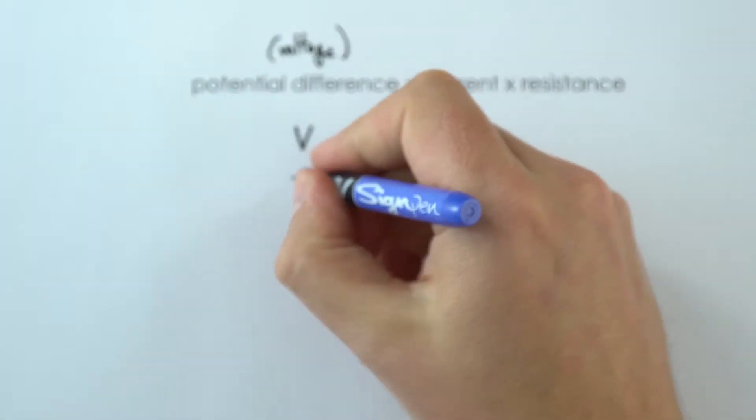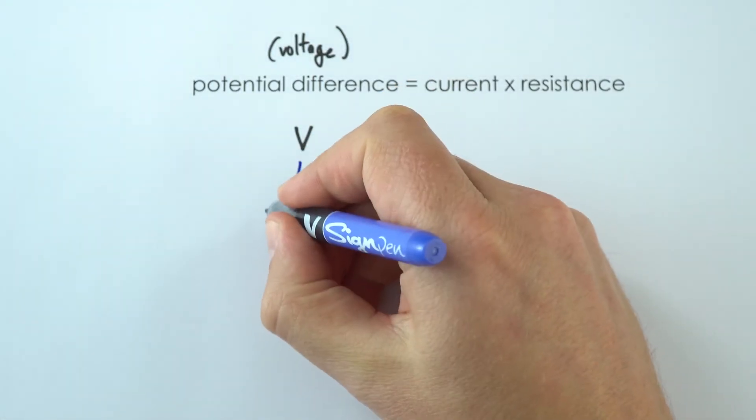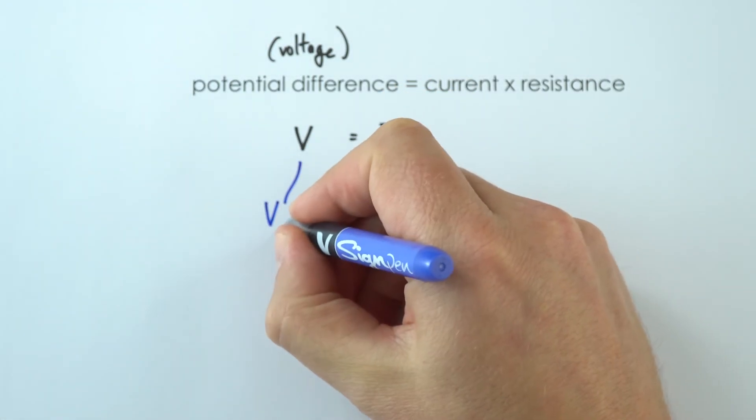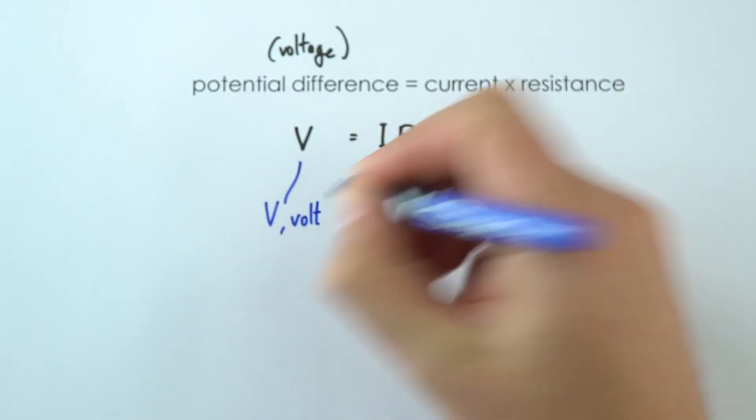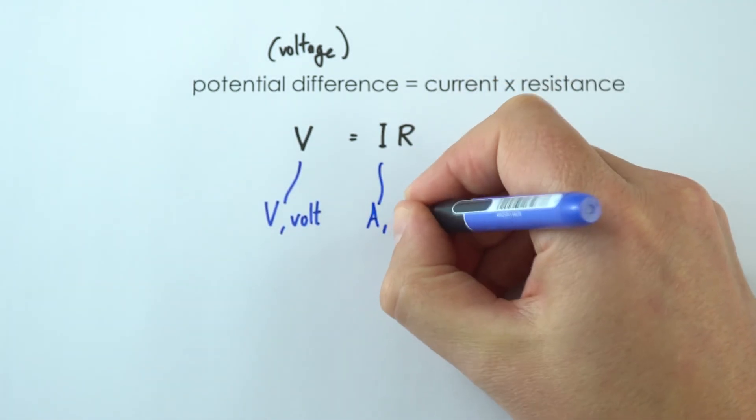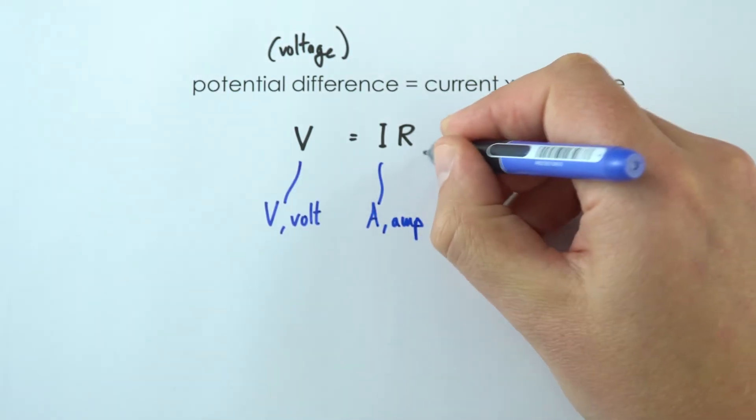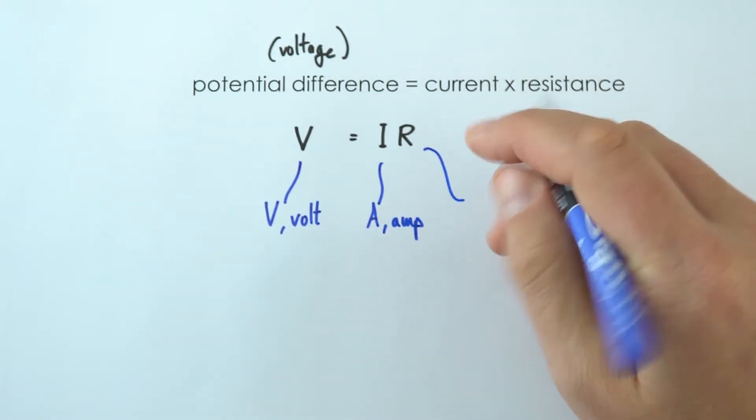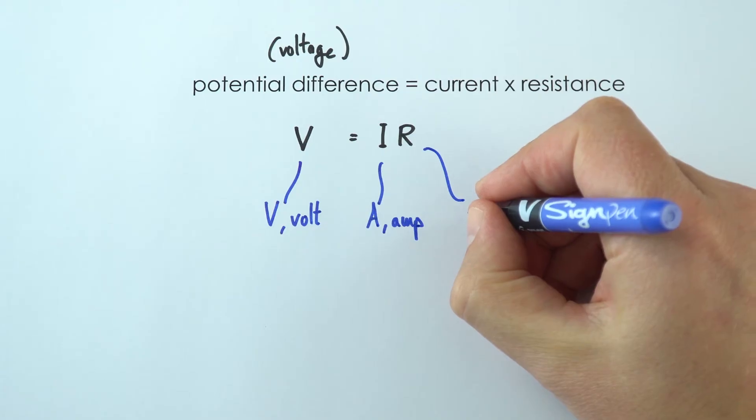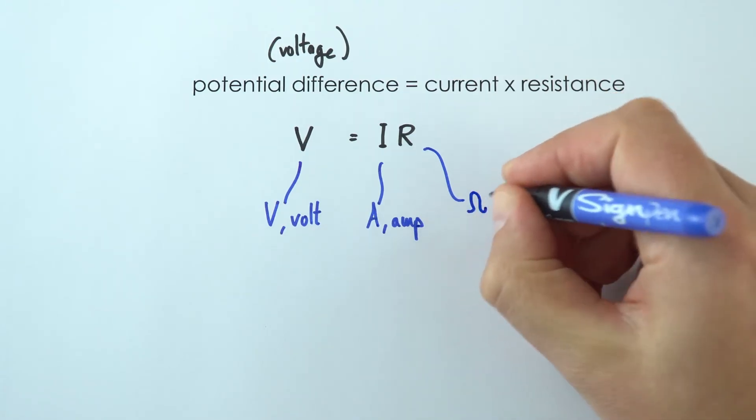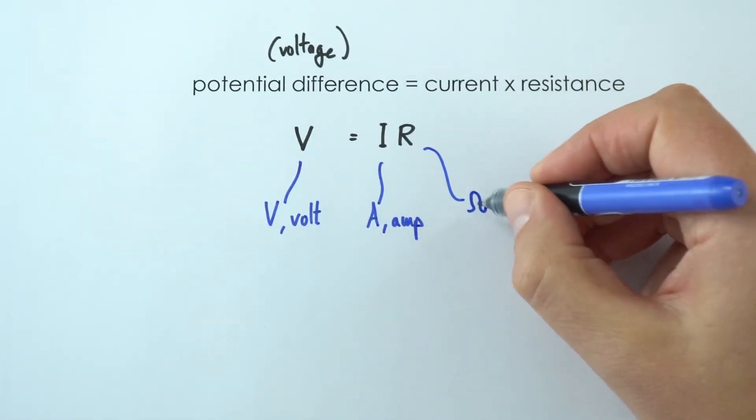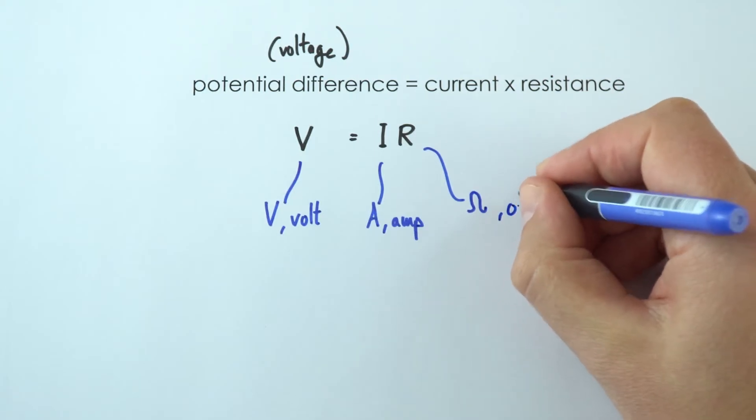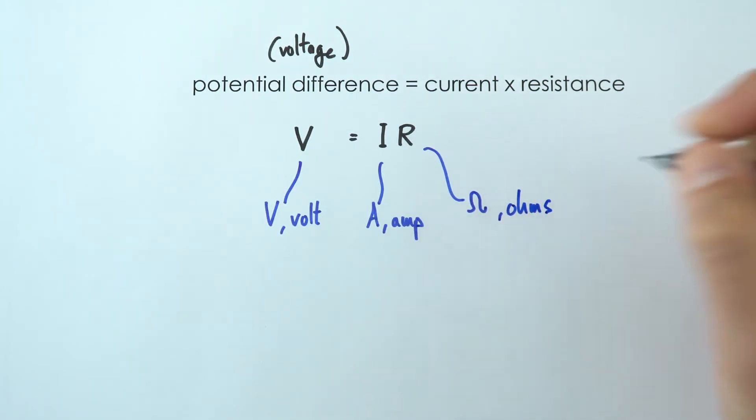Now the units for this, we actually measure the potential difference V in the unit of V, which stands for the volt. Current is measured in amps, which is a capital A, and then resistance, it's measured in ohms. And we actually use a Greek letter called omega, so it's this kind of weird shape here, so that's an omega. And that's because we measure resistance in ohms.